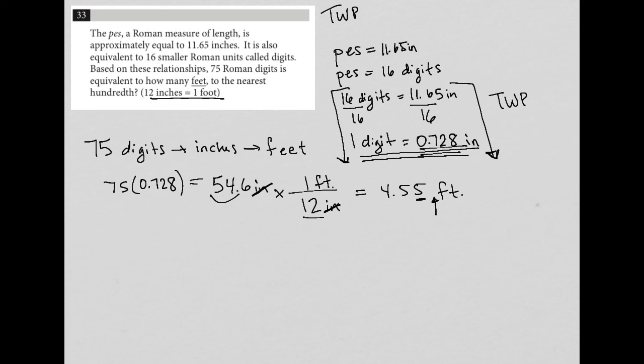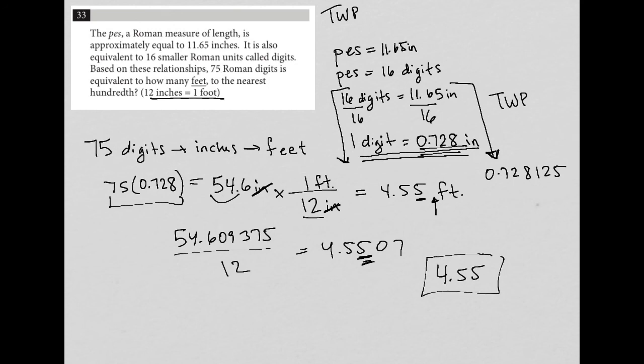11.65 divided by 16 is actually 0.728125. Let's see what that changes that into. So times 75 is 54.609375. And then that all divided by 12, that divided by 12 is 4.5507. So we're safe. So this five is still going to stay the same. So your answer should be 4.55 here.